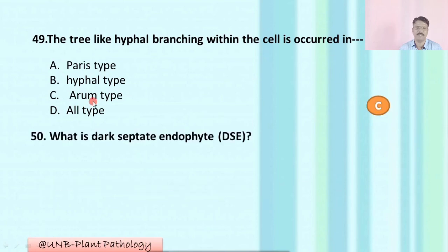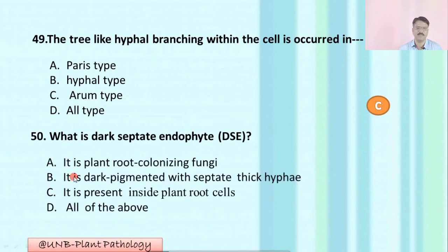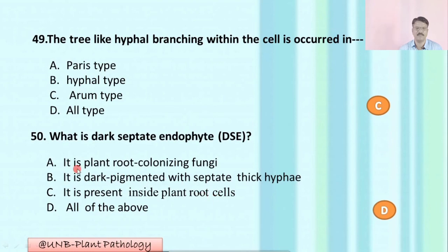Question number fifty: What are dark septate endophytes (DSE)? A: they are plant root-colonizing fungi; B: they are dark pigmented with septate thick hyphae; C: they are present inside plant root cells; D: all of the above. The correct option is D: all of the above — dark septate endophytes are plant root-colonizing fungi with dark pigmented septate hyphae present inside root cells.